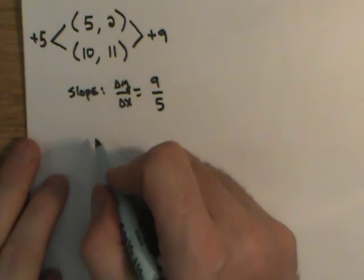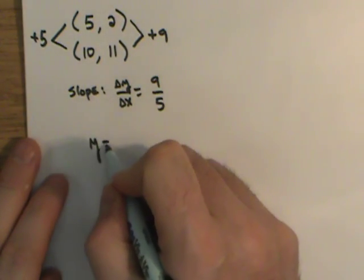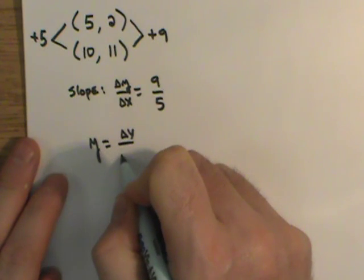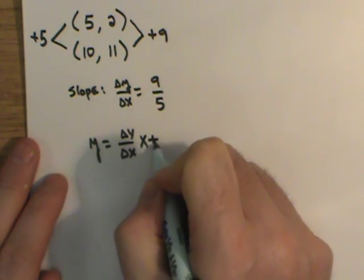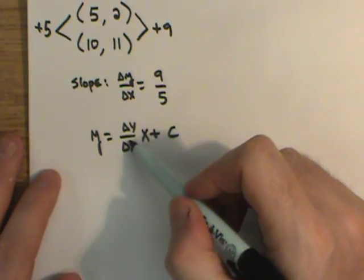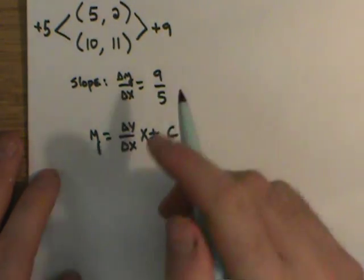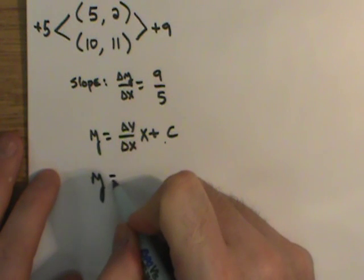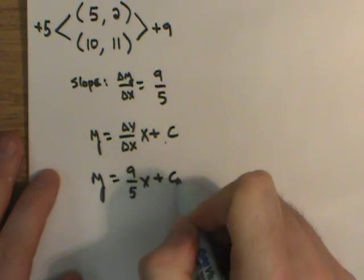As we write our equation, we're going to say y equals delta y delta x, x plus c. We're half done. We can plug that slope right into the slope-intercept form. So we can say y equals 9 fifths x plus c.